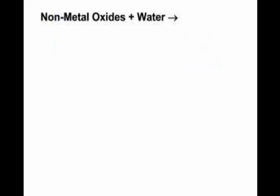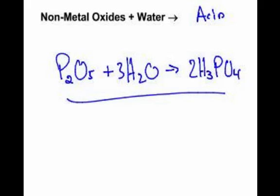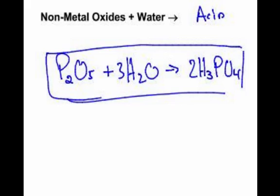The opposite: non-metal oxides plus water makes what? Acid. Classic case: diphosphorus pentoxide, P2O5, plus water. What does it make? Phosphoric acid, H3PO4. That's the one from the long problem from the last podcast. To balance this, you need 2 and 3 here. It makes phosphoric acid.